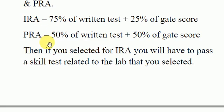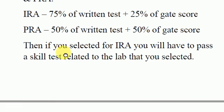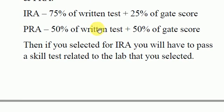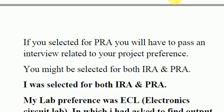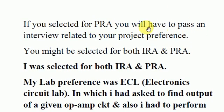If you perform well in both GATE score and written test, you will be selected for both. If selected for IRA, you will have to pass a skill test related to the lab you selected. If selected for PRA, you will have to pass an interview related to your project.